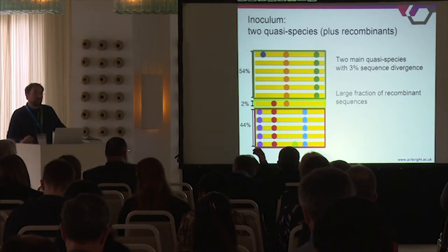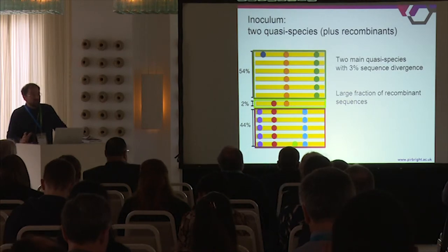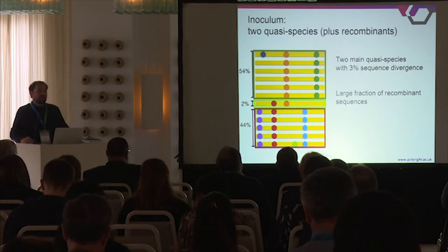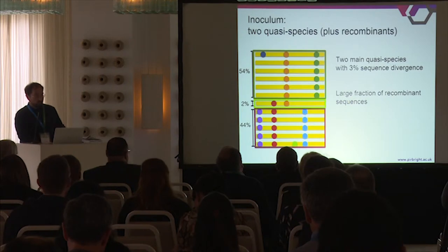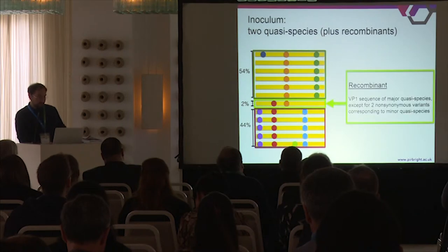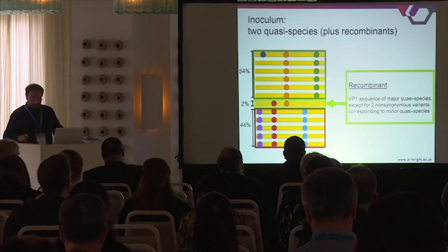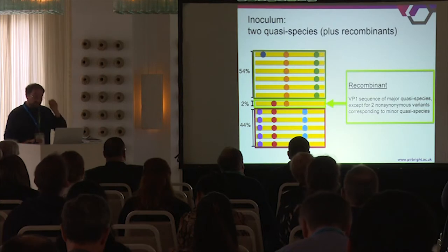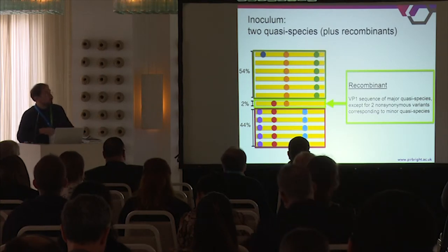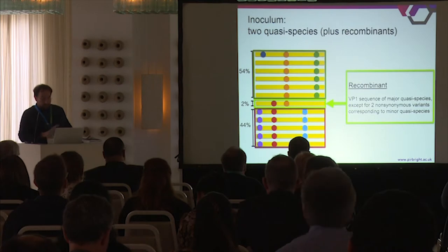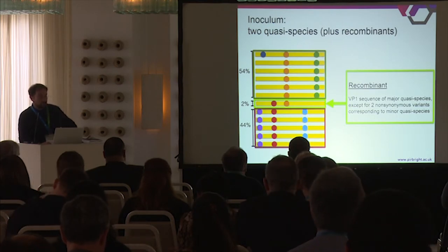In the inoculum, we found a structure with two different quasi-species with a divergence of about 3% — so very similar ones — plus a large fraction of recombinants between these two quasi-species. The initial frequencies were about the same: 55 and 45%. One of these recombinants is particularly important — it was about 2% frequency in the inoculum, and it has two non-synonymous mutations combining from one quasi-species to the other.